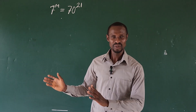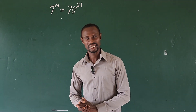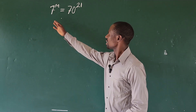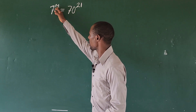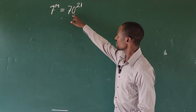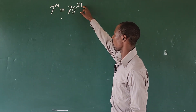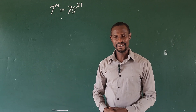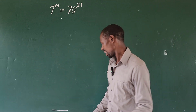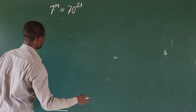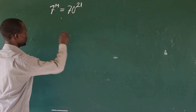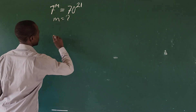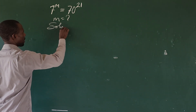Hi again, we have another math challenge here for today. The question is: 7 to the power of m equals 70 to the power of 21. What is the value of m? We are looking for m, so let's take our solution here.